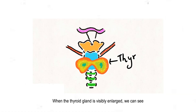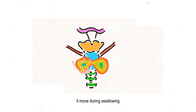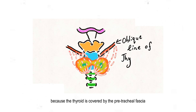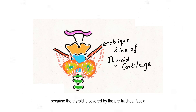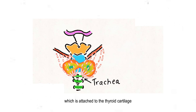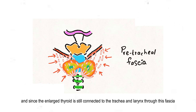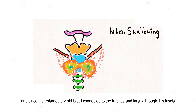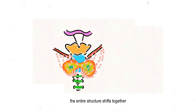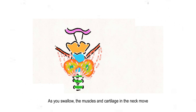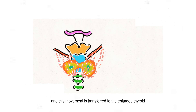When the thyroid gland is visibly enlarged, we can see it move during swallowing, because the thyroid is covered by the pre-tracheal fascia which is attached to the thyroid cartilage. This fascia moves with the swallowing process, and since the enlarged thyroid is still connected to the trachea and larynx through this fascia, the entire structure shifts together. As you swallow, the muscles and cartilage in the neck move, and this movement is transferred to the enlarged thyroid, making it visible as it shifts with the action.